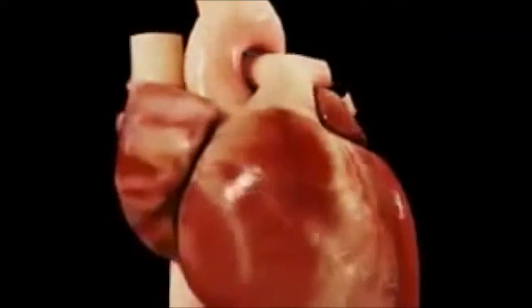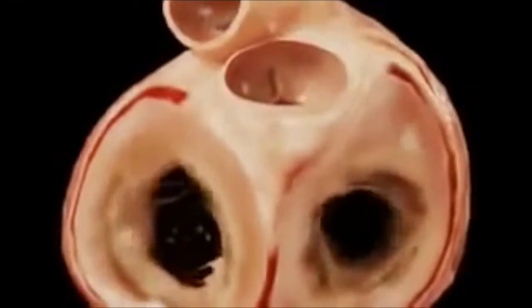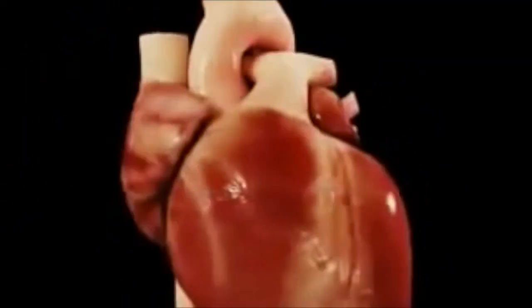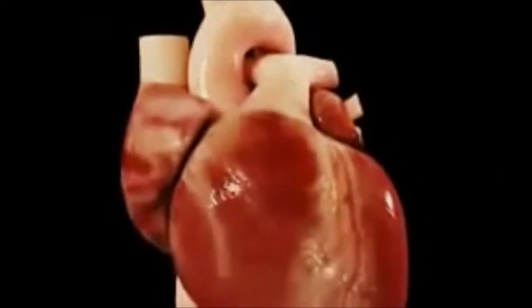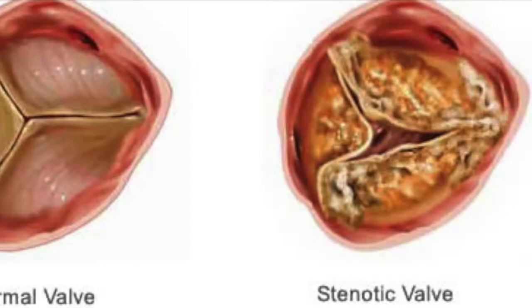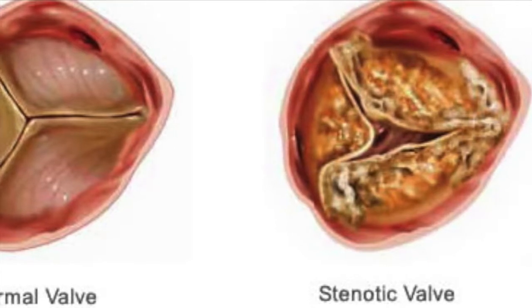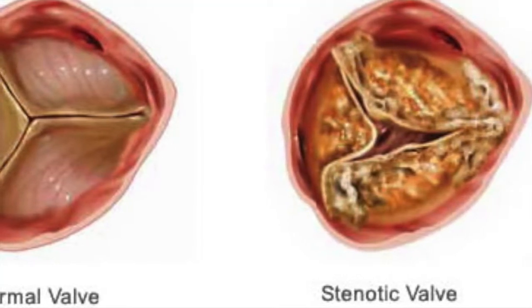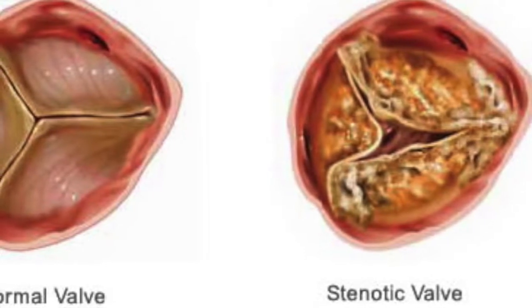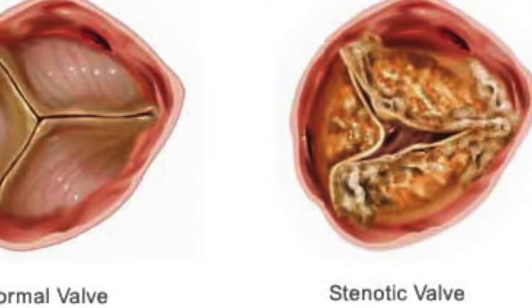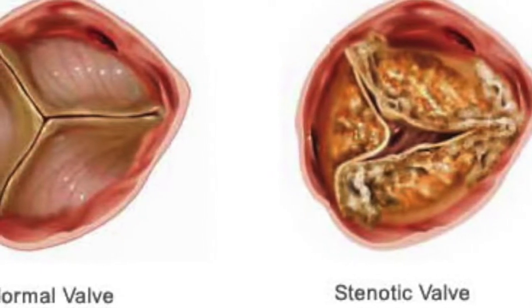Notice from the video that there is never a semilunar and atrioventricular valve open at the same time, as blood collects either in the ventricles or the atria, but never both at the same time. Because of their integral role in regulating the cardiac cycle, valvular defects and disease can cause major problems, ranging from respiratory issues and kidney failure to full-on heart failure.